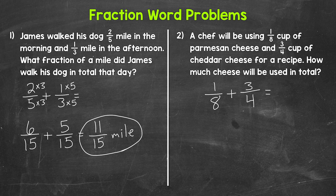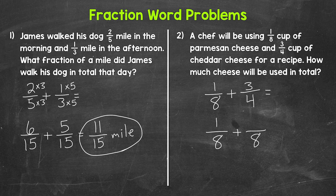The lowest common denominator for eight and four is eight. So let's rename both of these fractions with that denominator and then we can add. Our lowest common denominator is eight. Let's start with one-eighth, which already has a denominator of eight, so we do not need to rename one-eighth.